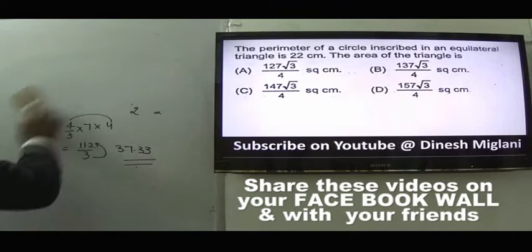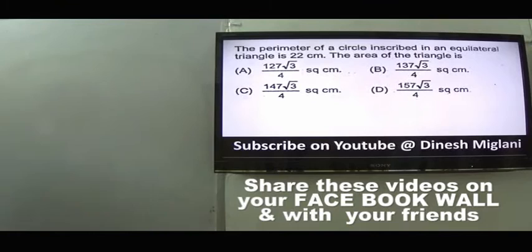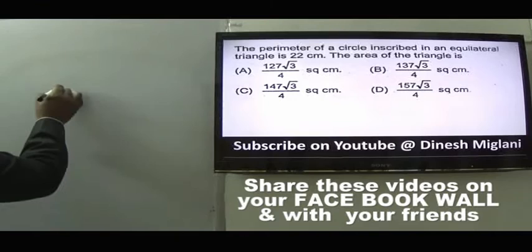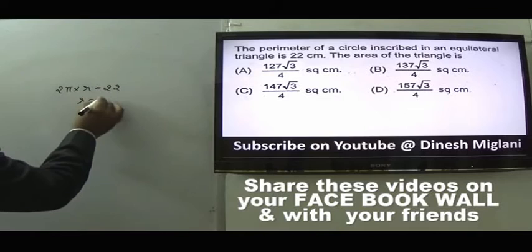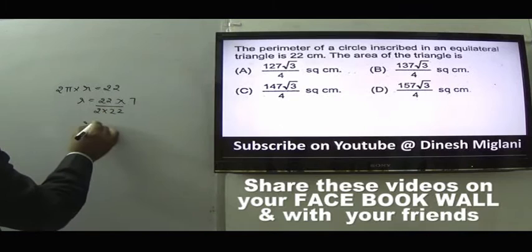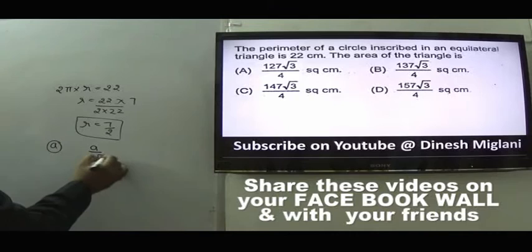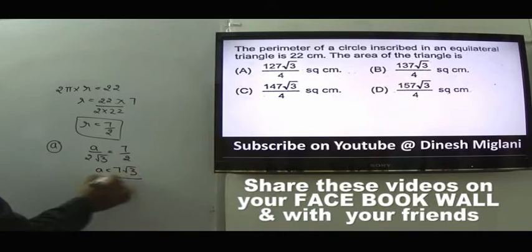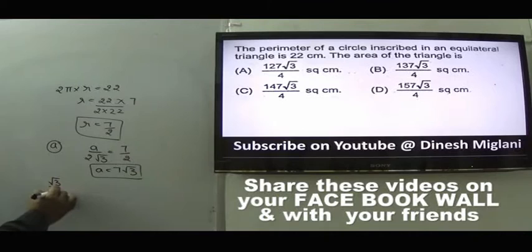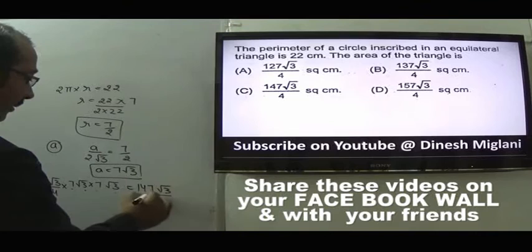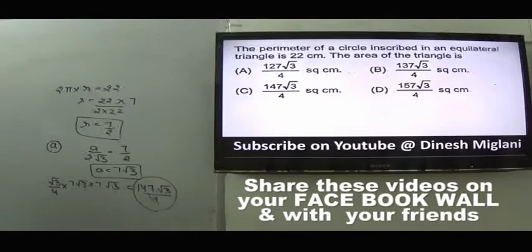Question 26: Perimeter of a circle inscribed in an equilateral triangle is 22. So 2πr = 22, giving r = 7/2. For an inscribed circle in equilateral triangle, r = a/(2√3), so a = 7√3. Area = (√3/4)×a² = (√3/4)×(7√3)² = (√3/4)×147 = 147√3/4. Answer is C.